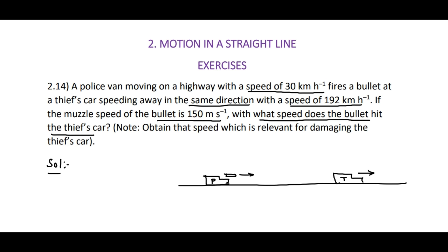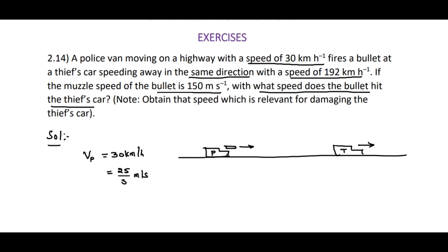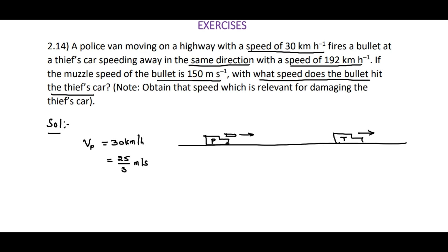Now, as per the given data, we have speed of police van, I am writing Vp, speed of police van that is 30 kilometers per hour. I am writing it in terms of meters per second: 25 by 3 meters per second. To convert kilometers per hour to meters per second, one kilometer per hour is 5/18 meters per second. And speed of the bullet, V of the bullet, is equal to 150 meters per second.